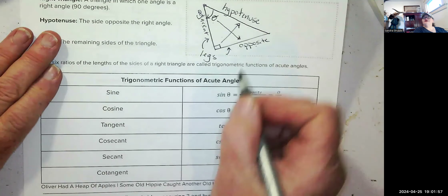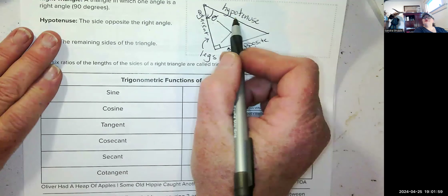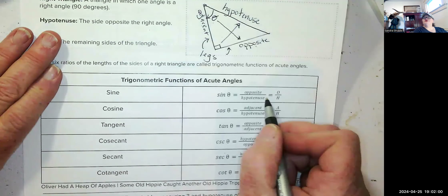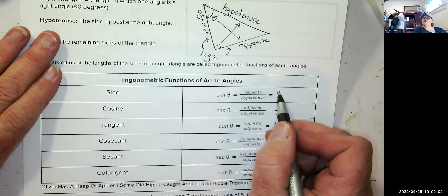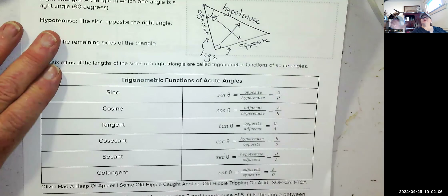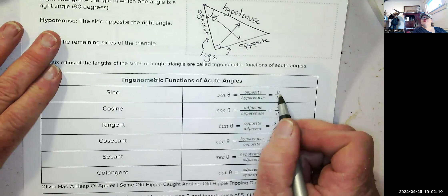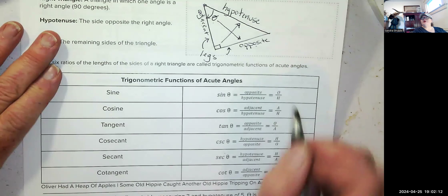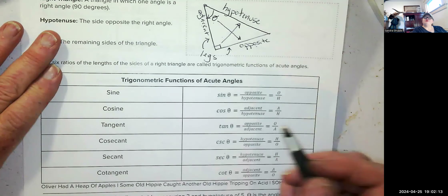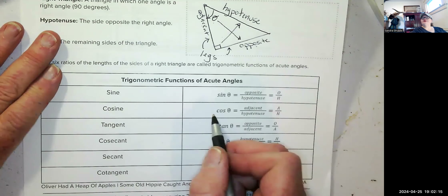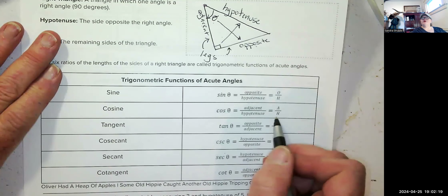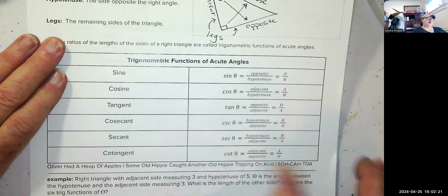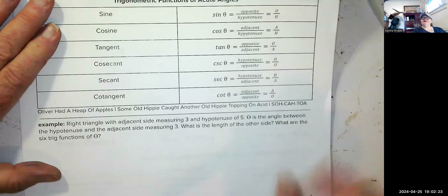The sine of theta is the opposite side divided by the hypotenuse. I created a little key so you can use O over H for opposite over hypotenuse, or you can memorize it. Cosine of theta is adjacent over hypotenuse, or A over H. Tangent is opposite over adjacent.